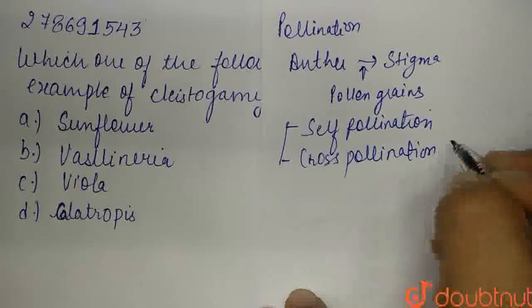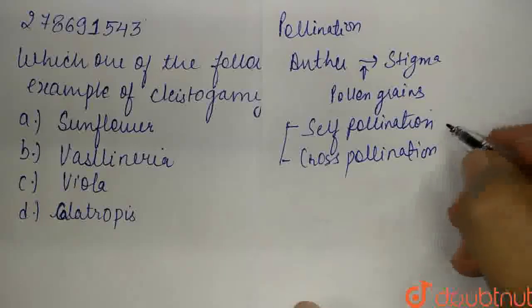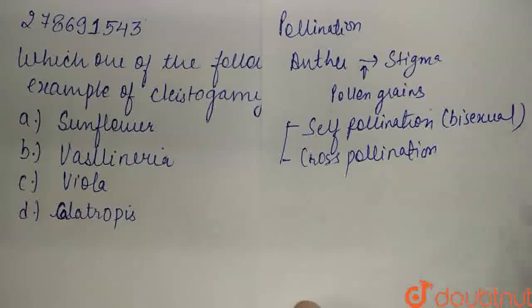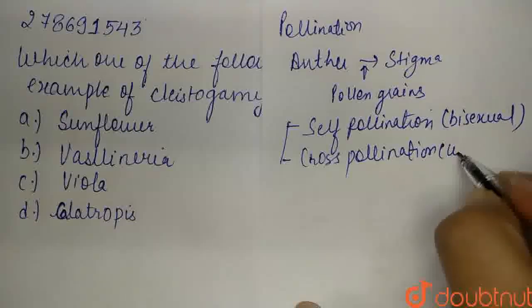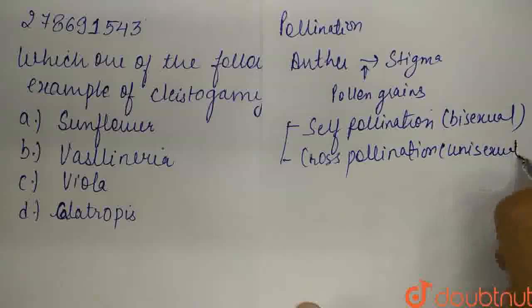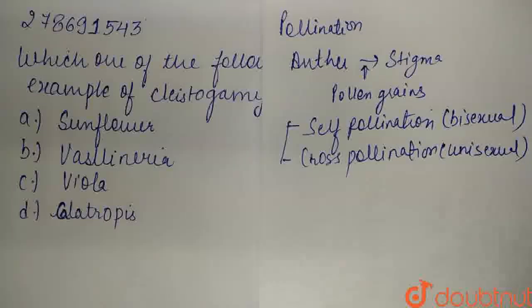Self-pollination guys - where does self-pollination occur? In bisexual flowers. Bisexual flowers mean that they have both male and female reproductive parts in the same flower. And cross-pollination occurs in unisexual flowers.